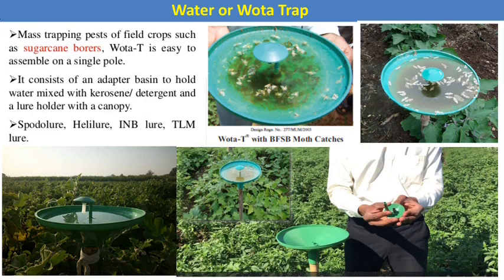The next is the water trap, mostly used against the brinjal shoot and fruit borer in brinjal crops, and for mass trapping pests of field crops such as sugarcane borers. The water trap is easy to assemble on a single pole and consists of an adapter basin to hold water mixed with kerosene or detergent, and a lure holder with a canopy. Example lures used include Spodolure and Helilure. This trap is mostly recommended against the brinjal fruit and shoot borer.